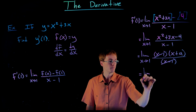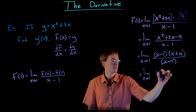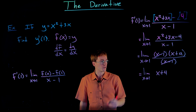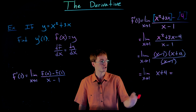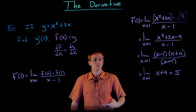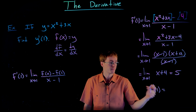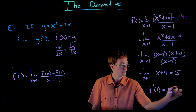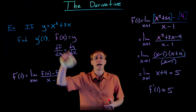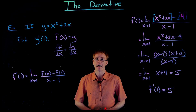This gives us an equivalent limit: the limit as x approaches one of just x plus four. This is now a limit of a simple polynomial, and we can evaluate it using direct substitution. Plugging in x equals one: one plus four is five. So y prime of one, or f prime of one, is five. That is the slope of the tangent line to this function at the point when x equals one, describing the instantaneous rate of change of our function at that point.